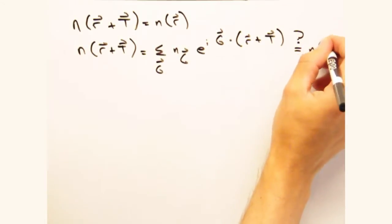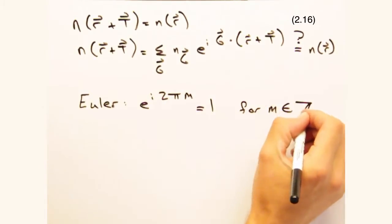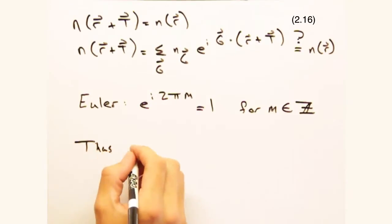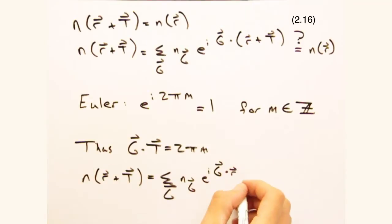From Euler, we know that e to the i times two pi times some integer is always one. So if g dot t equals two pi times some integer m, translational symmetry is maintained.